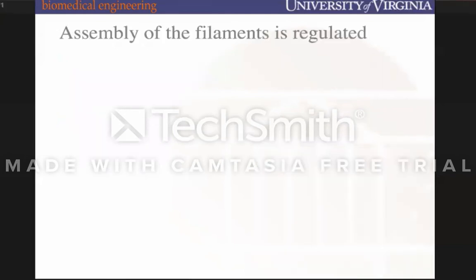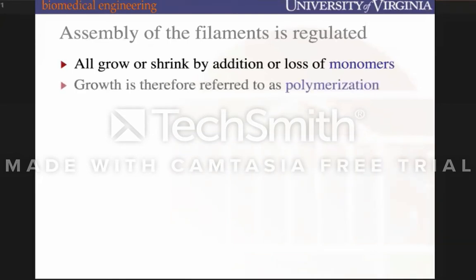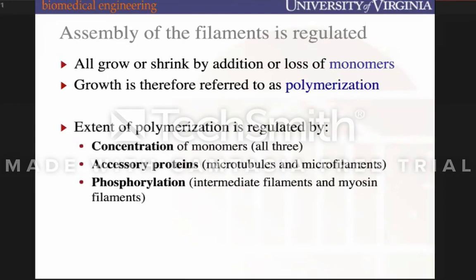The assembly of these filaments is regulated through a few different means. They can all grow or shrink — be assembled or disassembled — and that growth is referred to as polymerization. Polymerization is typically regulated by three things: first, the concentration of the monomer. As there is more monomer available, more polymerization will occur, and as there's less monomer available, less polymerization.